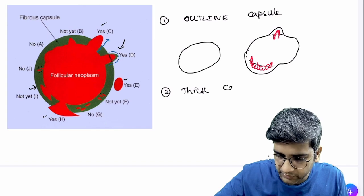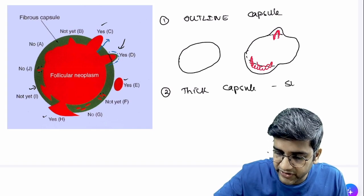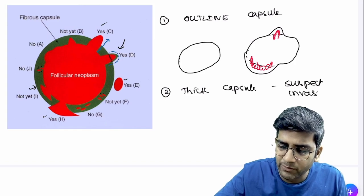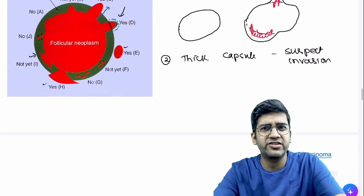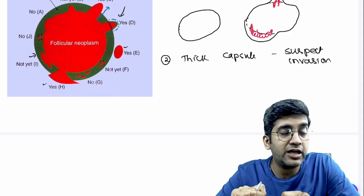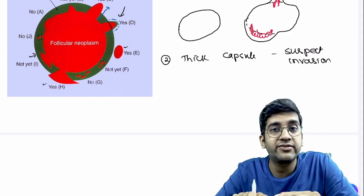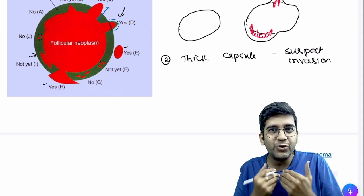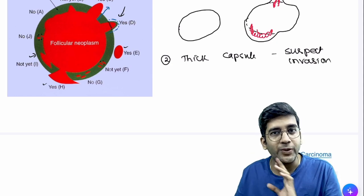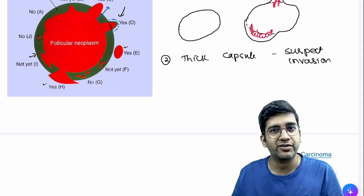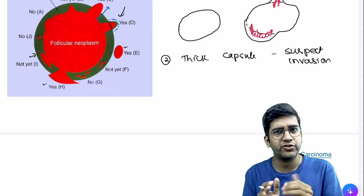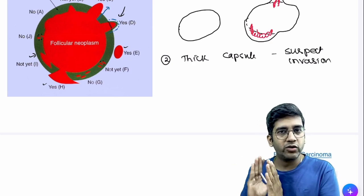The second take-home point: whenever you have a thick capsule, always suspect invasion. Follicular adenoma capsule — as we have seen in previous discussions — will not be thick. This can be very handy even on frozen section. By 'thick' I mean you can appreciate the capsule at low power. If you need 20× or 40× to see the capsule, it is not thick; if you can appreciate it at low power, that is thick.